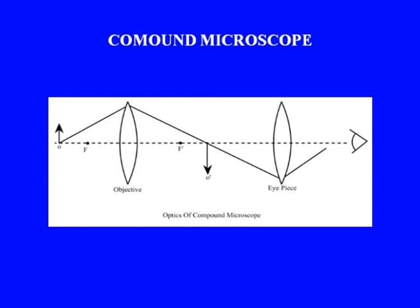In a compound microscope, rather than one, there are usually two magnifying systems in tandem — one defined by the objective and the other defined by the eyepiece. This avoids the practical problem of making a lens of very short focal length.